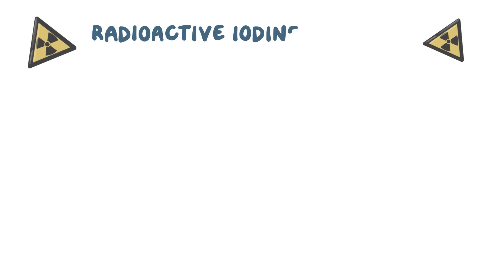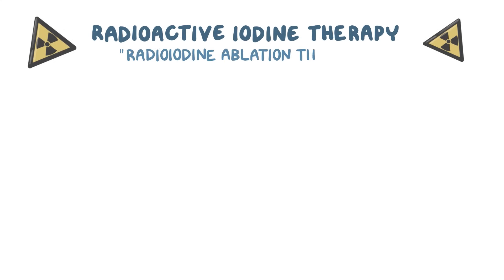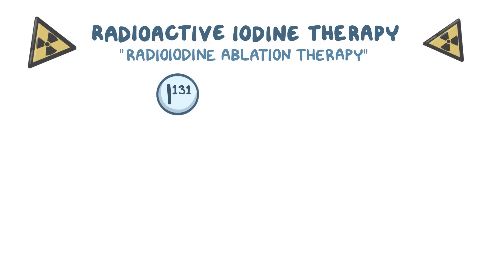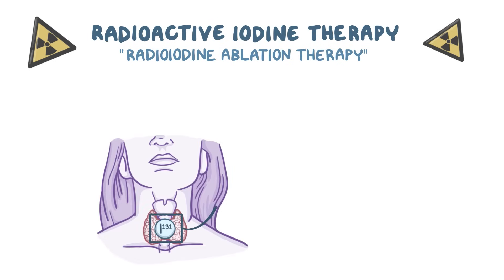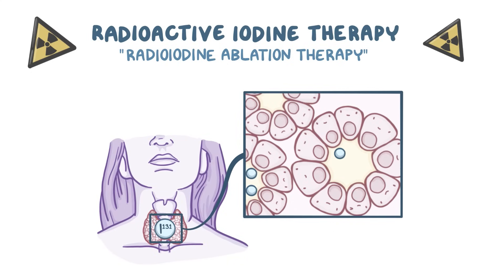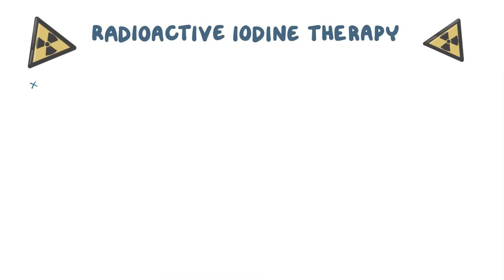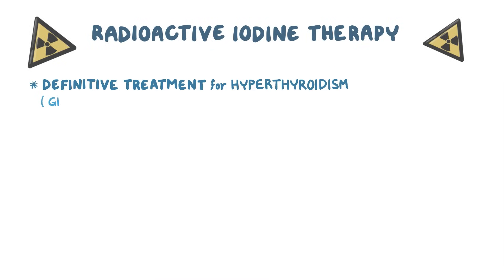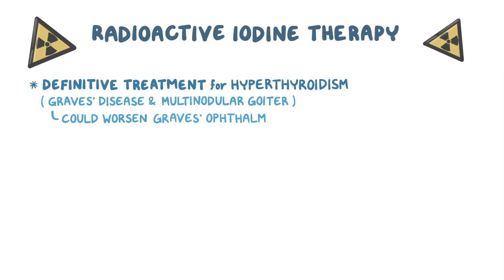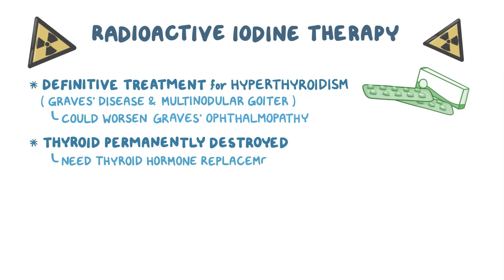Let's start with radioactive iodine therapy, also known as radioiodine ablation therapy. The isotope of iodine used is I-131. It's taken perorally and eventually gets taken up by the thyroid. Over the course of a few weeks, the radioactive isotope collects in the colloid and emits beta radiation that causes permanent damage to the thyroid. This is the definitive treatment for hyperthyroidism caused by Graves' disease and toxic multinodular goiter, but it could also worsen Graves' ophthalmopathy. Since the thyroid is permanently destroyed, the person will need to take thyroid hormone replacements like levothyroxine to prevent hypothyroidism.